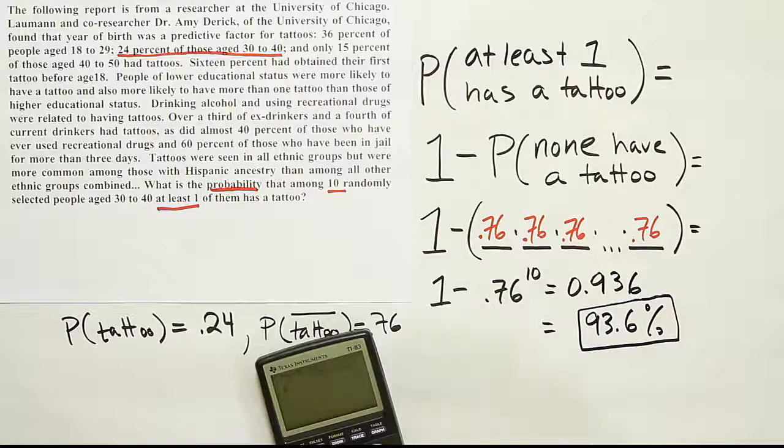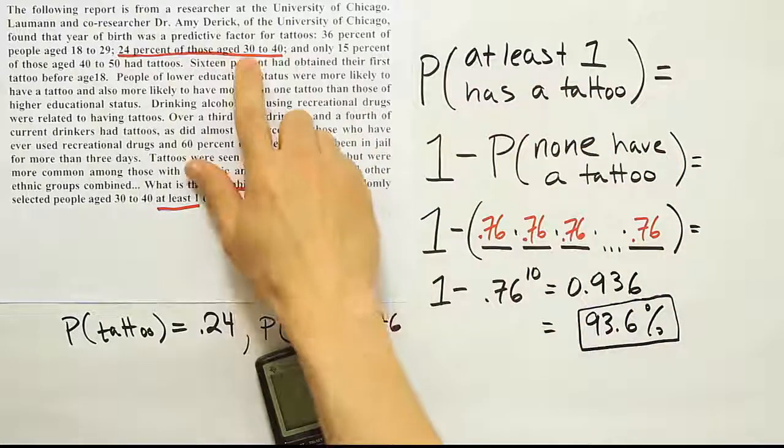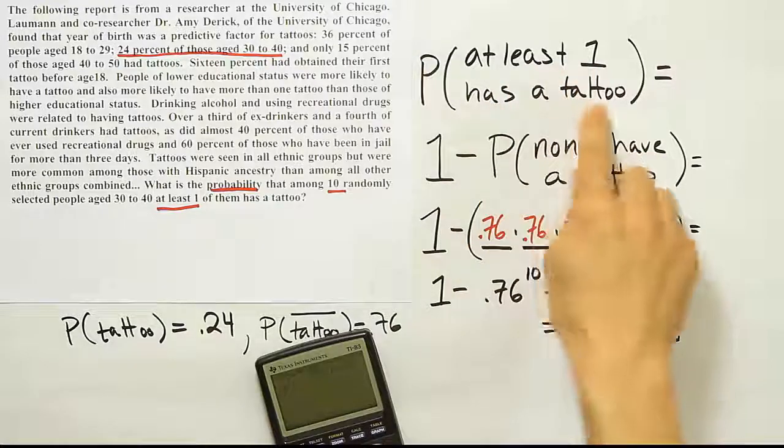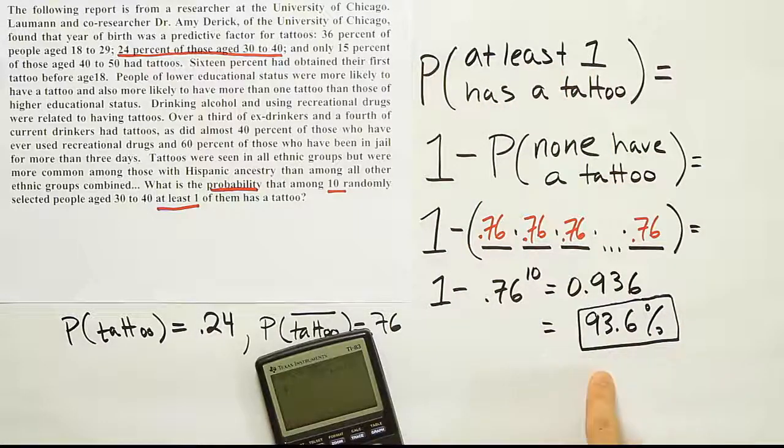So the probability that at least one person in this age bracket, from 30 to 40, out of 10 people selected, probability that at least one of them has a tattoo is almost 94%. So that's what we did.